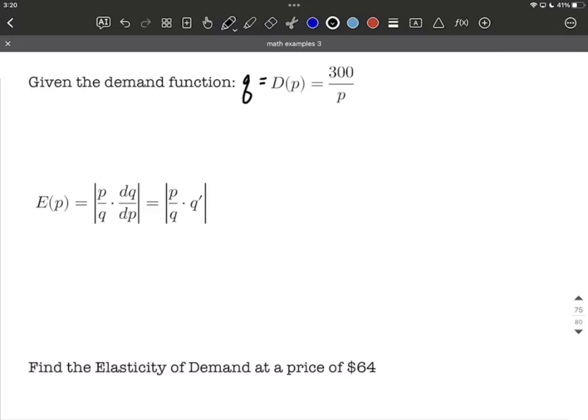Before we find that derivative, I'm going to rewrite our demand function. Instead of having P to the first power in the denominator, I'm going to move that up to the numerator and make that P to the negative first power. That way we can just use the power rule. The power rule allows us to bring along the 300, bring the exponent down in front, so negative 1 comes down and becomes a multiplier, then we reduce the exponent by 1. So our old exponent negative 1, we subtract 1 from that, negative 1 minus 1 makes negative 2 for our new exponent.